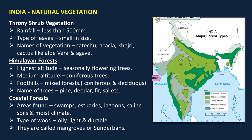Next is thorny shrub vegetation, which receives less than 500 mm of rainfall. The types of leaves here are small in size. The vegetation found here includes katechu, acacia, khejri, cactus, aloe vera, and agave — both aloe vera and agave have medicinal properties.